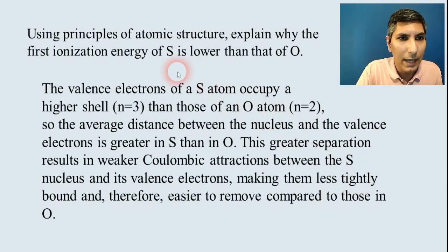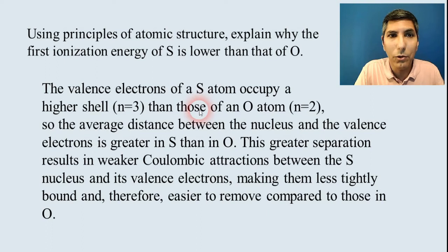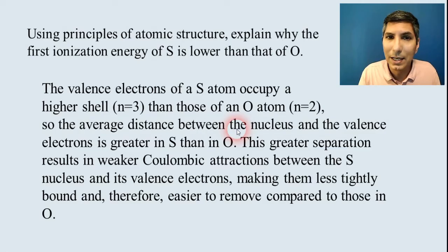So you want to say that the valence electrons in sulfur are farther away. They occupy a higher shell or a higher energy level than those in oxygen. So that means that the distance between the nucleus and the valence electrons is farther. It's greater in sulfur than it is in oxygen.